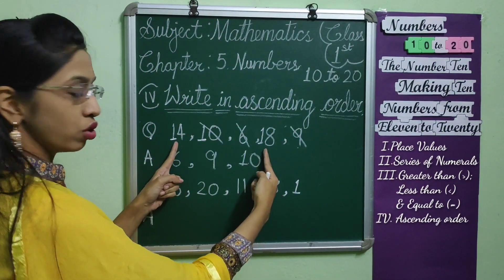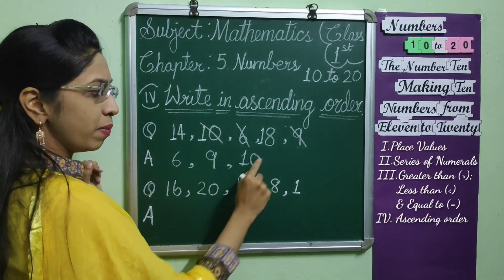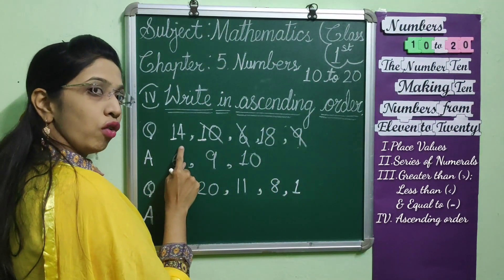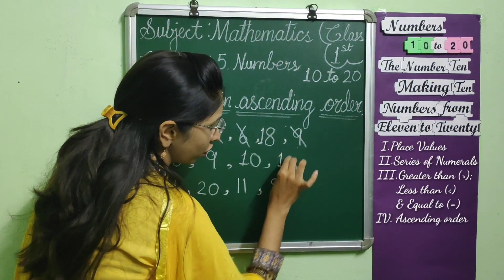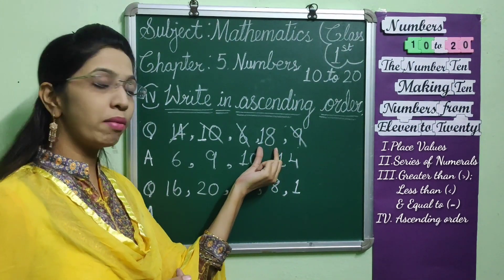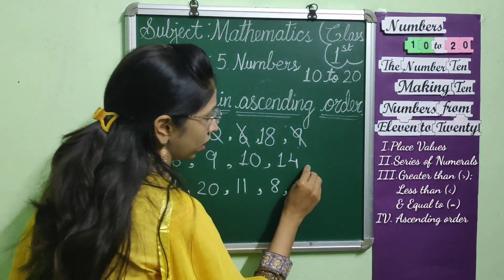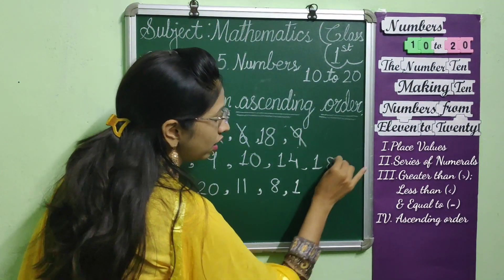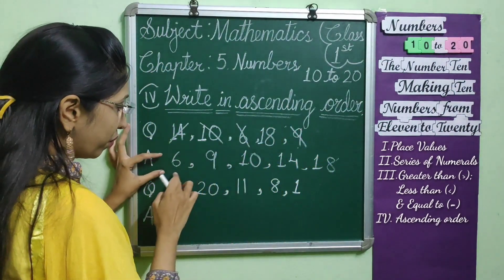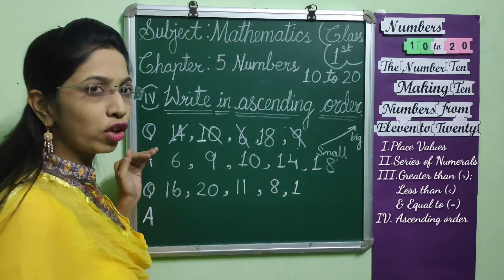How many numbers are remaining? Only 2 — 14 and 18. Which is a little bigger than 10? The next number is 14. So, we write 14. What is remaining? Only one number, that is 18. So, 18 is the biggest number. We have arranged these numbers from small to big.